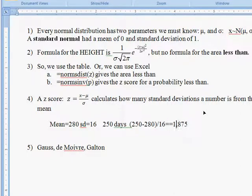The negative tells you that the 250 is less than the mean.